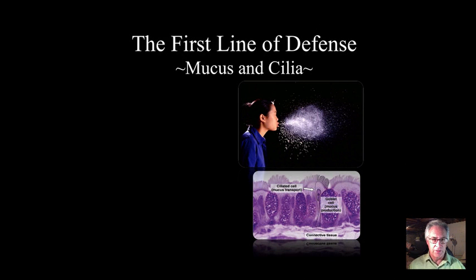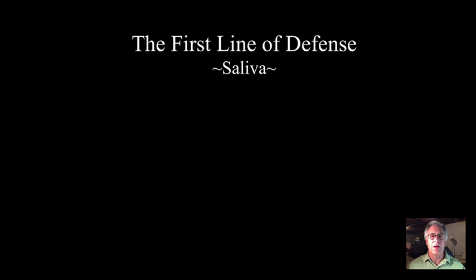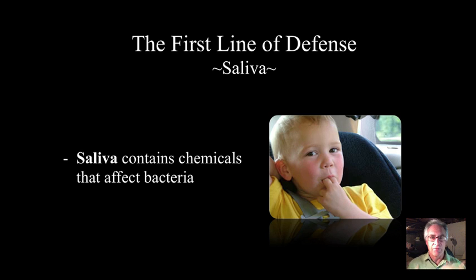But before we do that, there is another first line of defense. It's really not pleasant to talk about, but obviously the mucus and cilia that line our nasal cavities — when foreign particles come in, they stick to the mucus and we will swallow them or cough them up. The cilia or hair in our throats and nasal passages help move them back so they can be swallowed and dealt with. The saliva and mucus lining our throat and nasal cavities also have chemicals in them, things like amylase, that make it difficult for bacteria to survive.